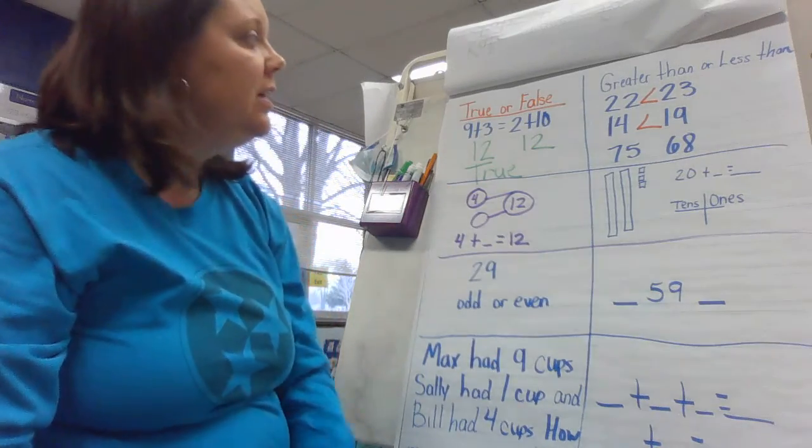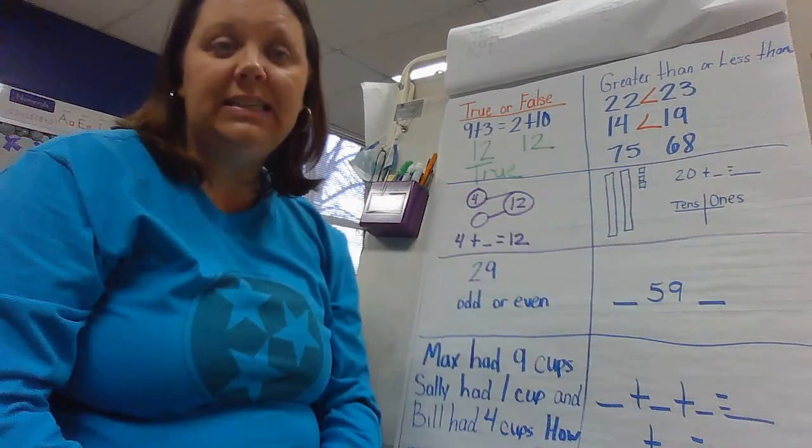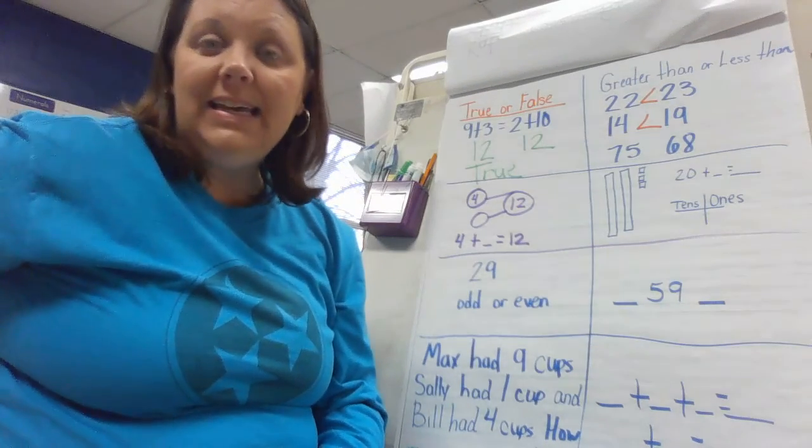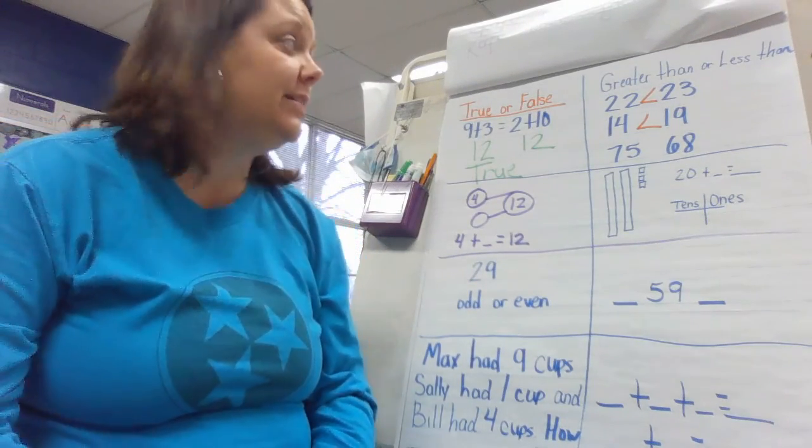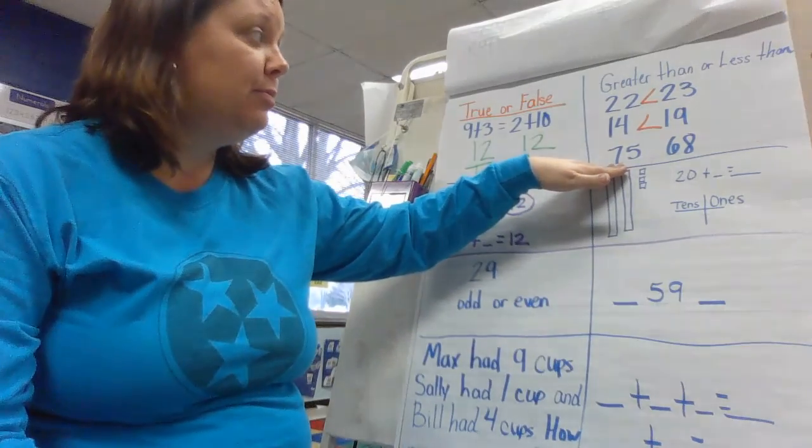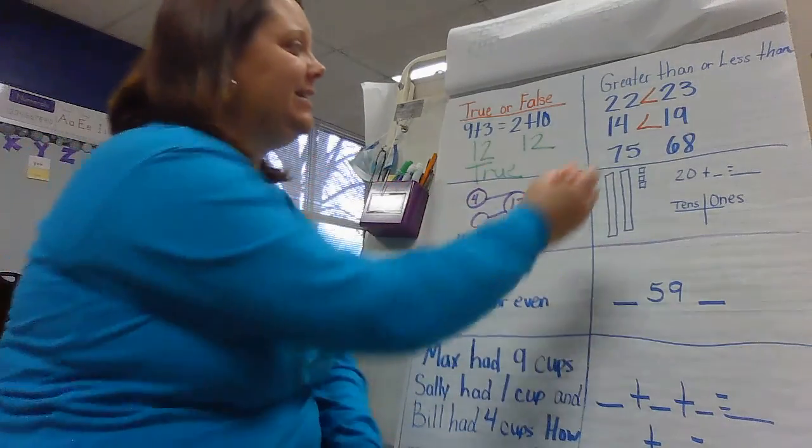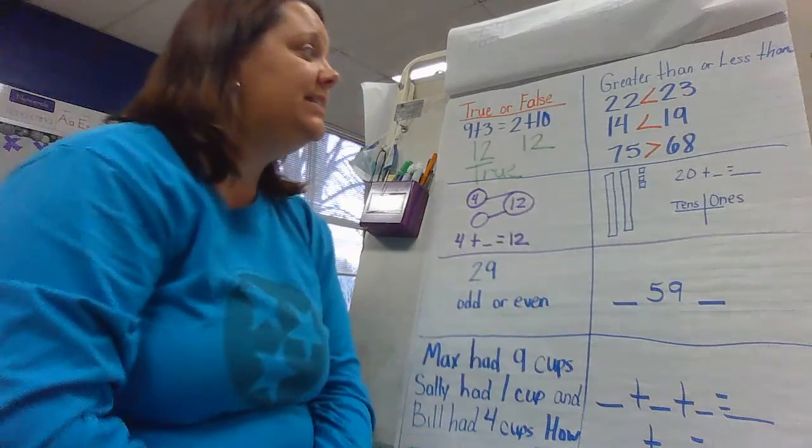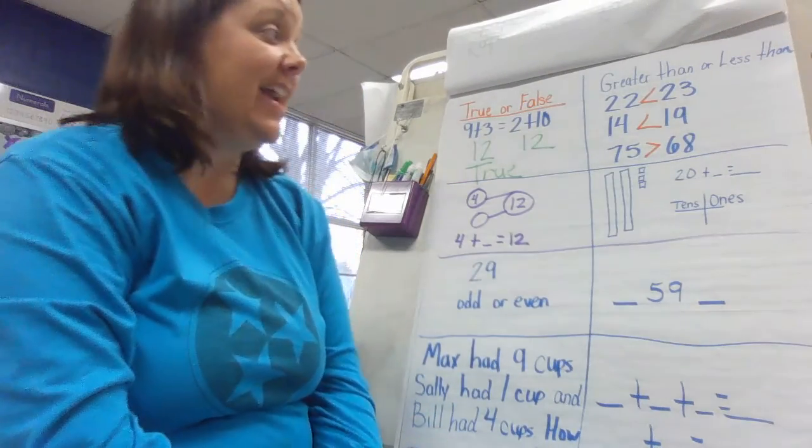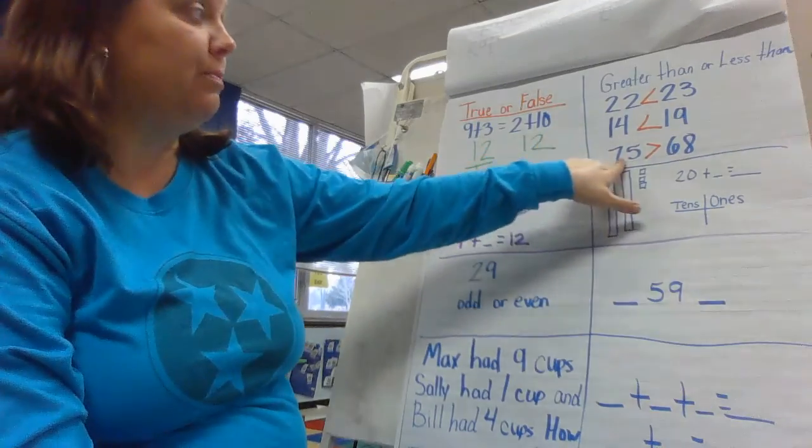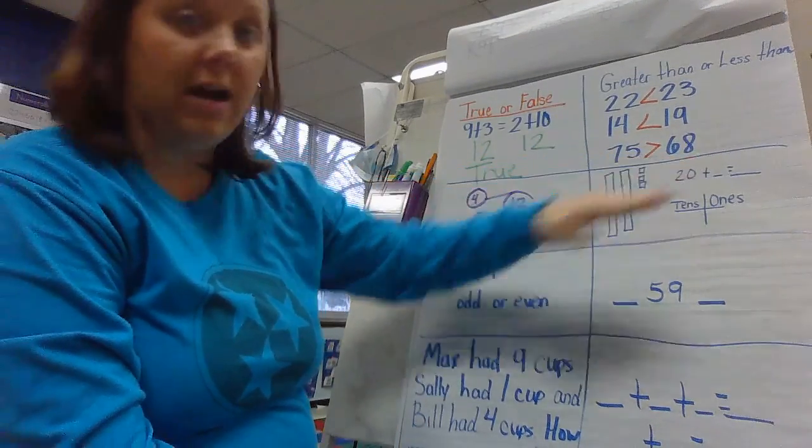The next one is 75 and 68. Well, that one is pretty easy. We can look at the tens place and we know that 7 is greater than 6. This is a number in the 70s. This is a number in the 60s. So we would say 75 is greater than 68. And always start with your number on the left and read left to right.